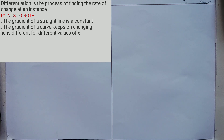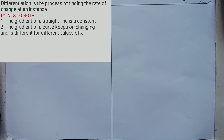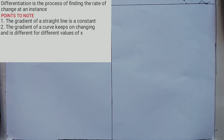There are points to note in this topic. Point number 1: the gradient of a straight line is a constant. Point number 2: the gradient of a curve keeps on changing, and it is different for different values of x.